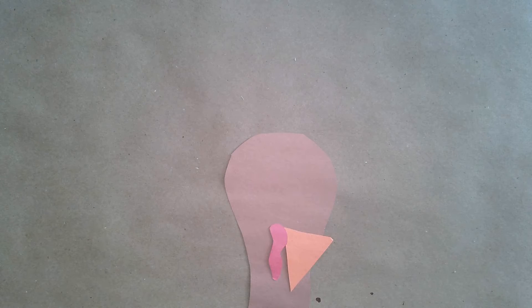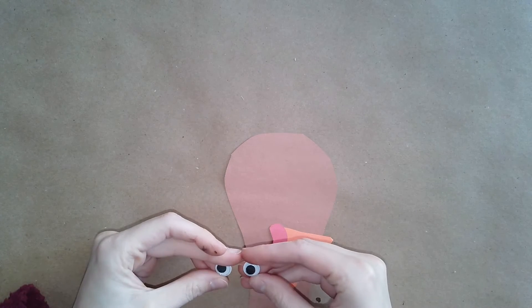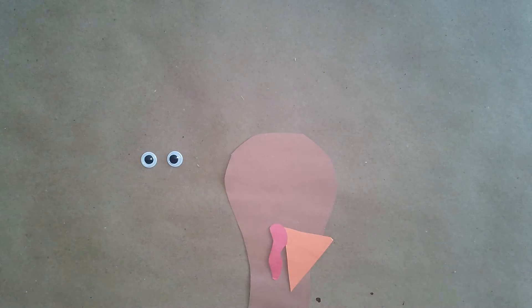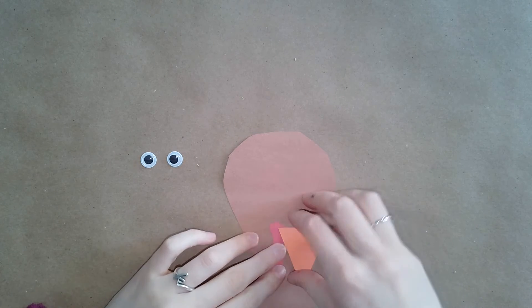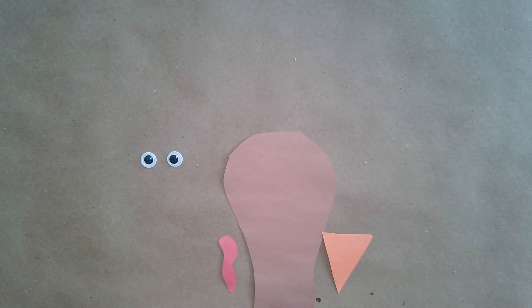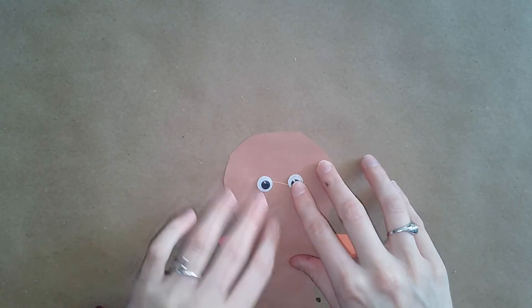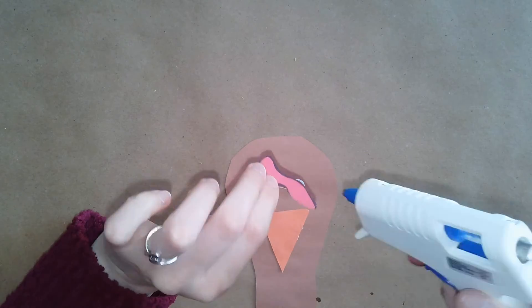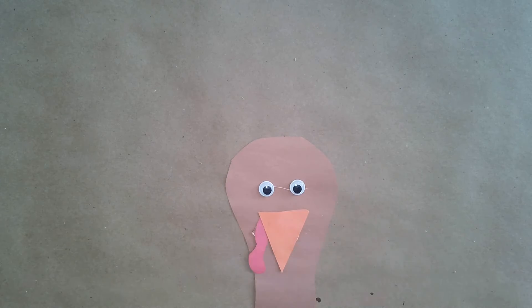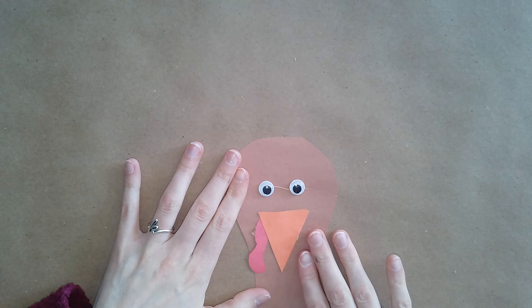And now, put them all together. And you'll also want to grab some googly eyes. And I'm going to be using hot glue, but you can use any other kind of glue stick or liquid glue. You're going to glue these pieces to the brown piece. And now that our turkey's head has been put together.